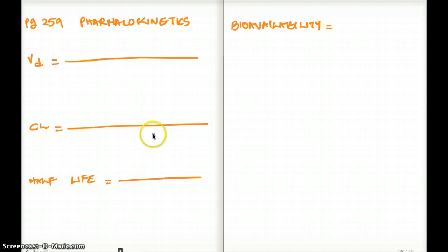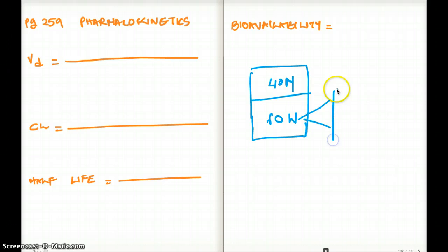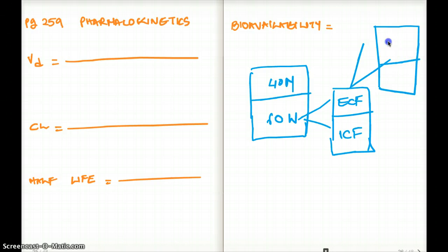The first thing we have to understand is volume distribution. Remember how we broke down our body mass into two compartments? There was 40% mass and 60% water. This was again divided into extracellular fluid and intracellular fluid. Extracellular fluid was again divided into interstitial fluid and plasma volume.